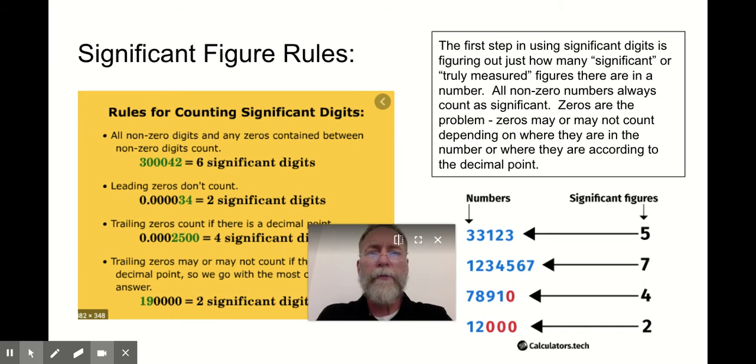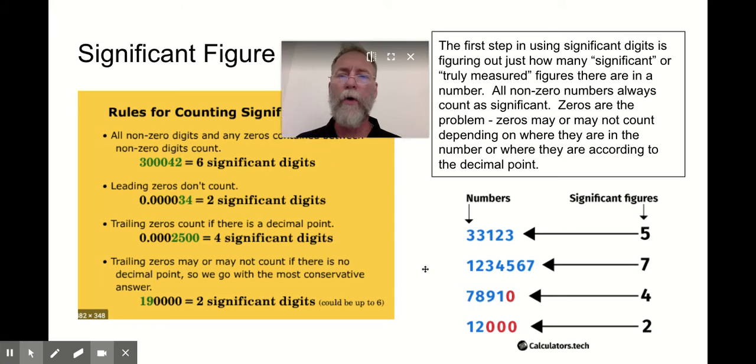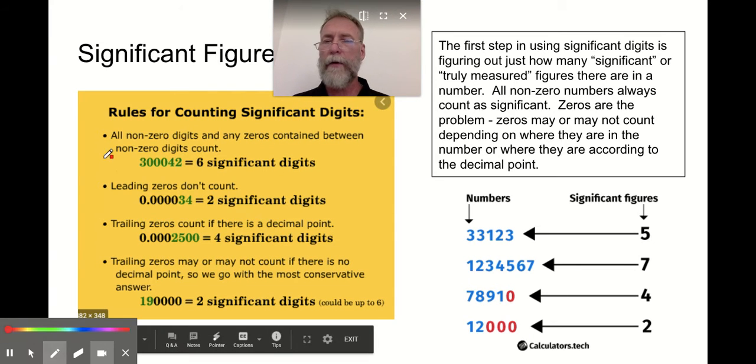One thing with significant figures, there's a number of rules. And when we apply these rules, what we're really trying to do is figure out how many significant digits are in a number first. Because before you can go on and do anything mathematical, multiplication, division, times, addition, you have to figure out how many significant figures am I actually juggling. So on this slide are the set of significant figure rules.